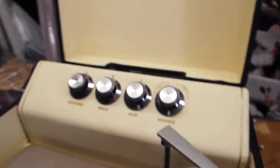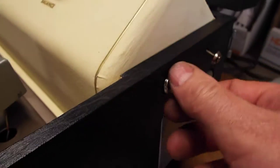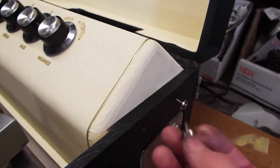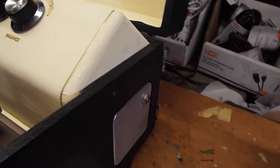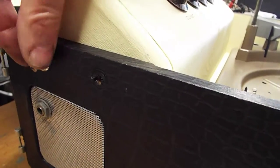Next thing we've got to do is remove the amp cover. To do so, we want to take out the four screws. There's two on each side. I've already loosened them. One, two, and then on the other side, three, four. Four screws.